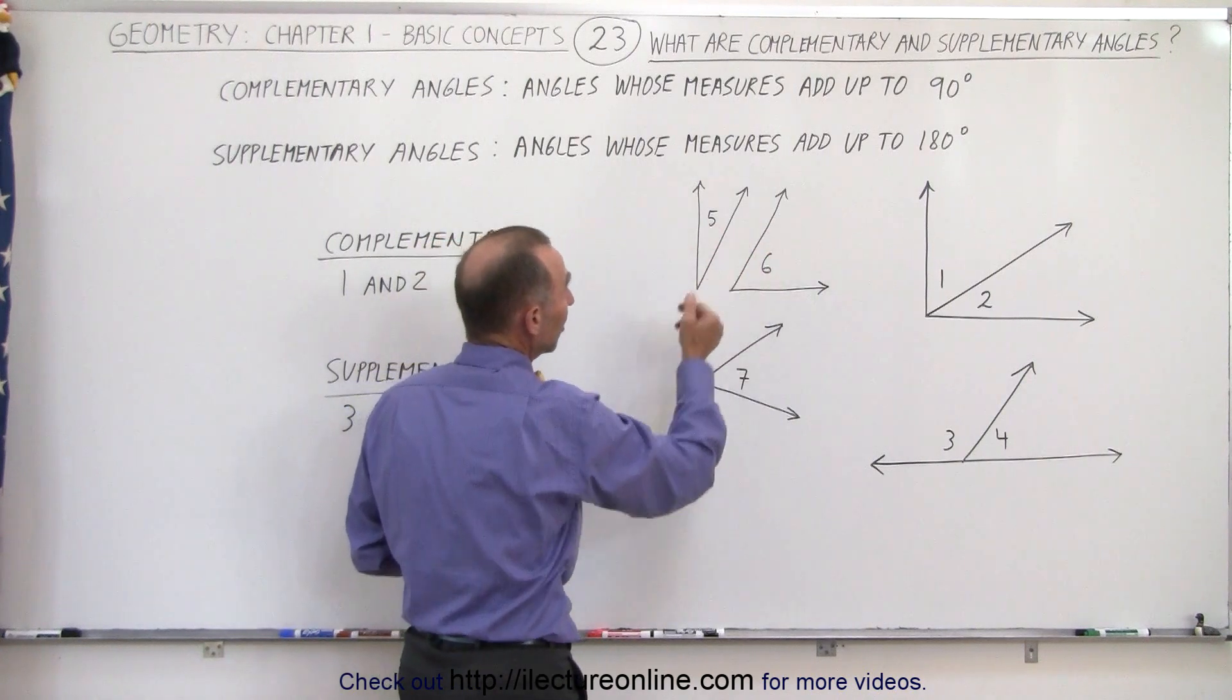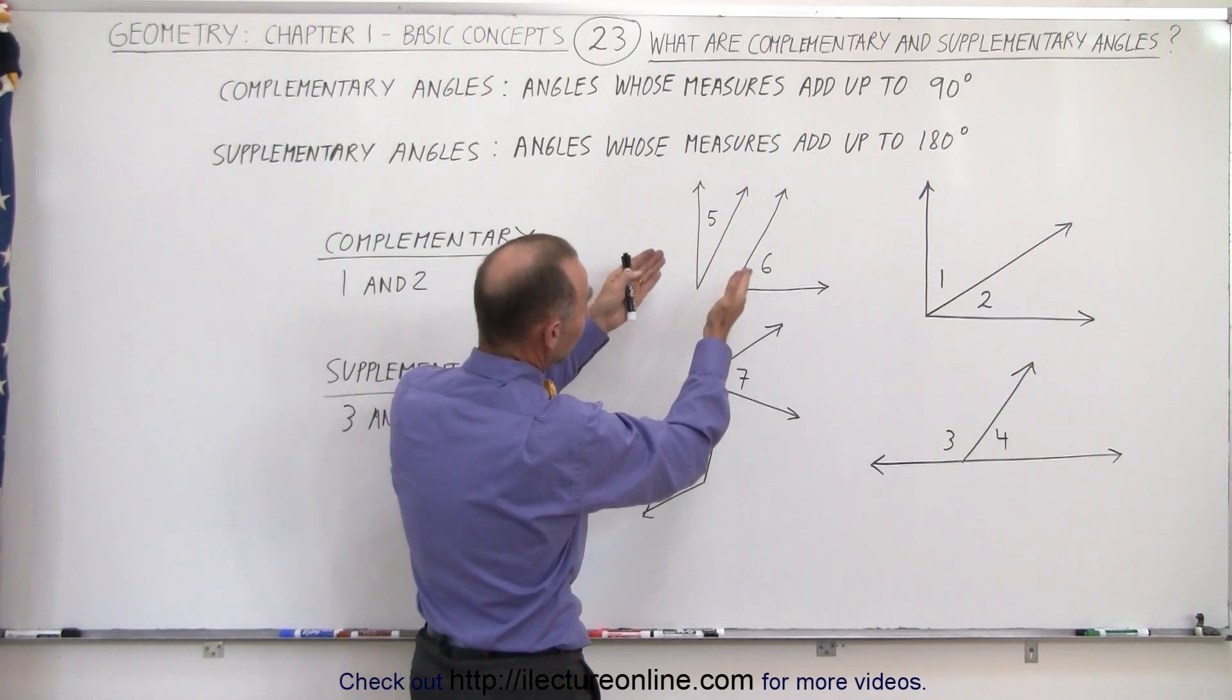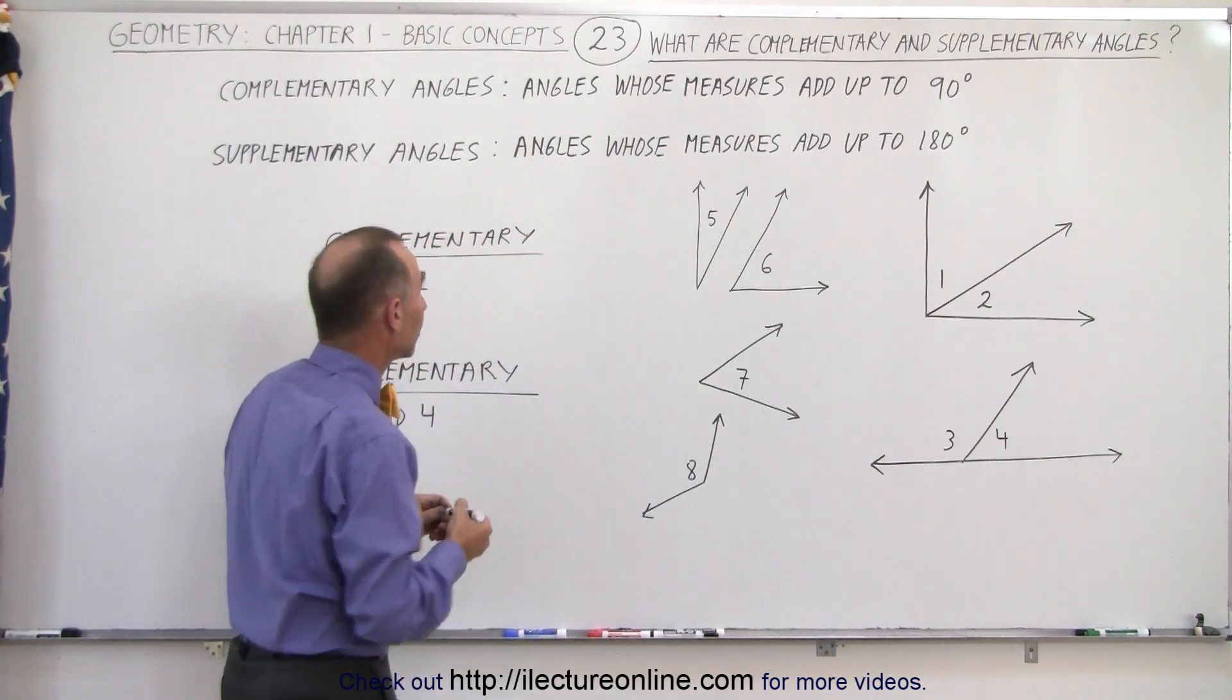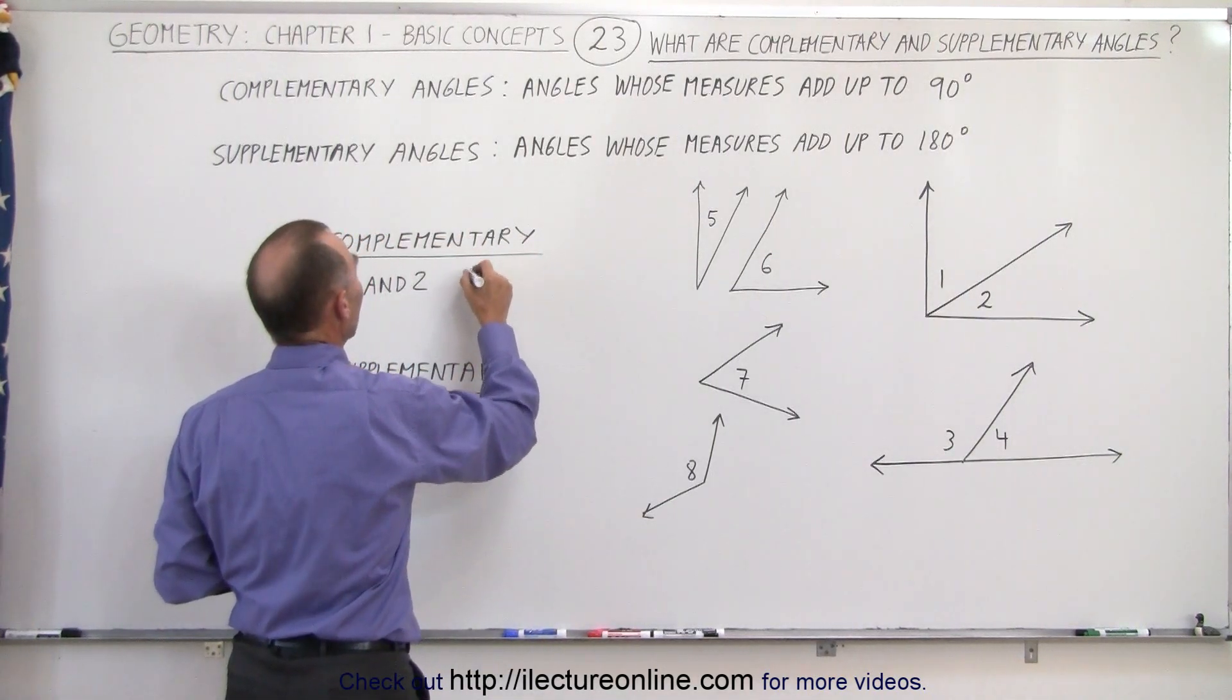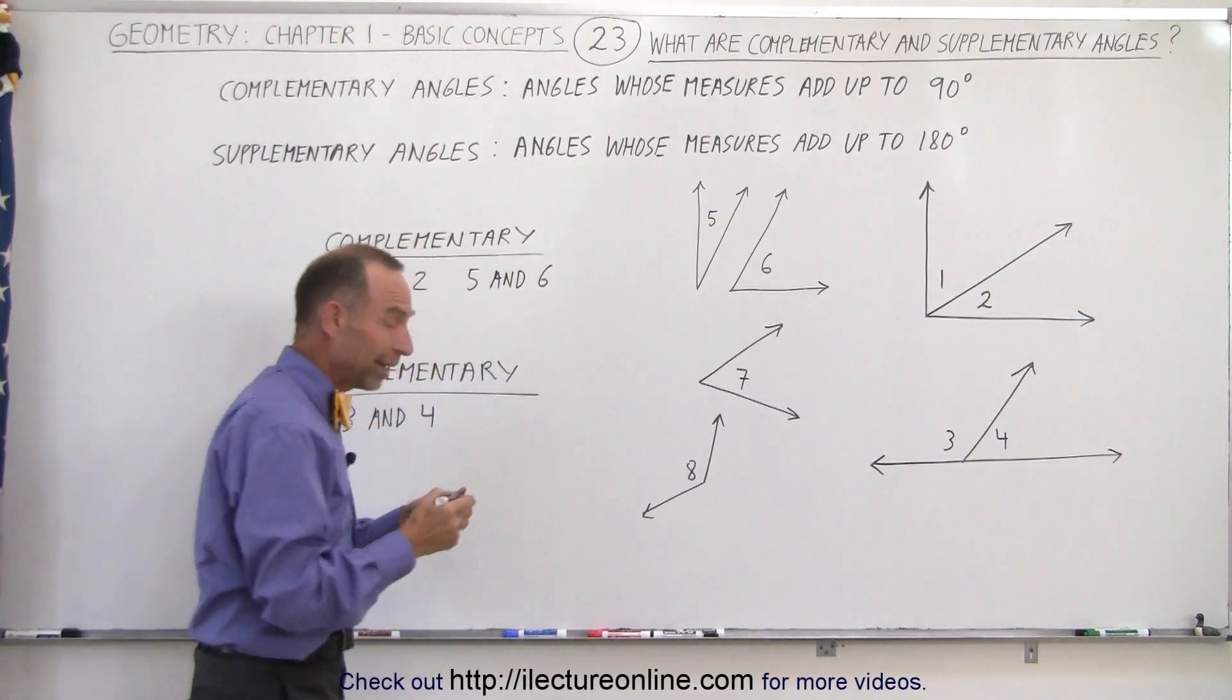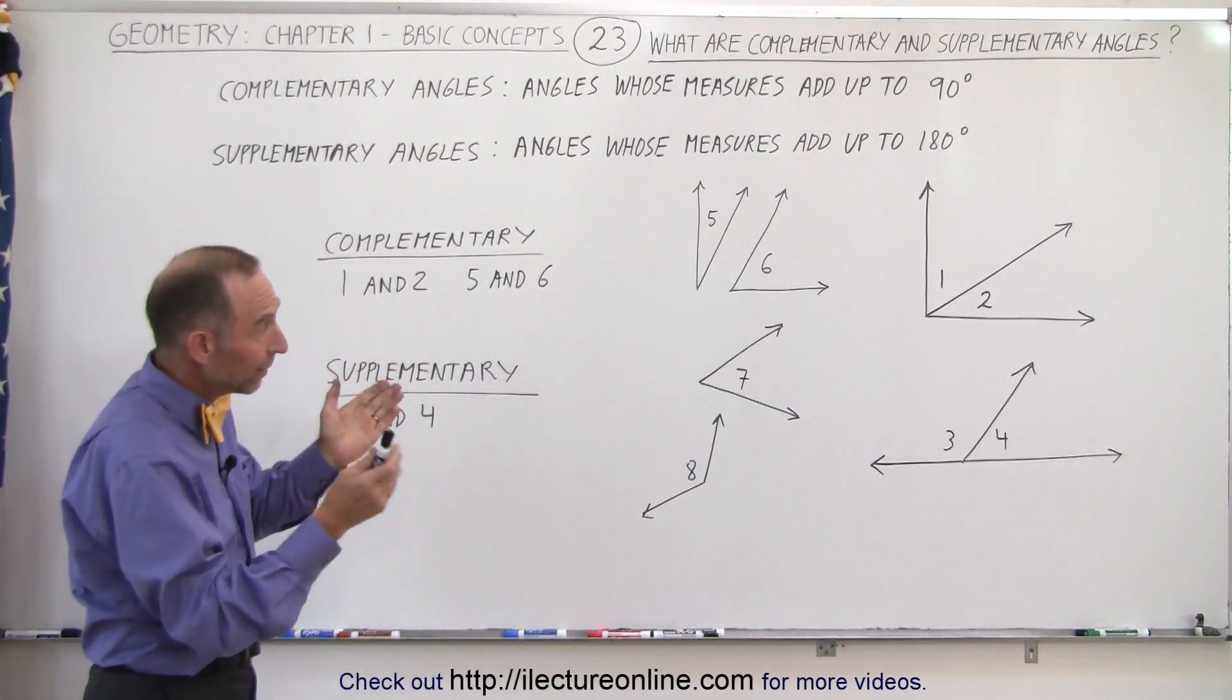We can look at angles 5 and 6 here and notice that yes, they do indeed add up to 90 degrees, at least their measures add up to 90 degrees. So we can say that angles 5 and 6 are also complementary. So it's not required that they're adjacent.